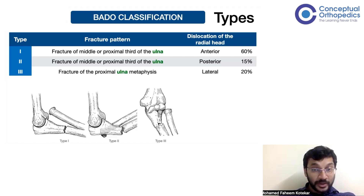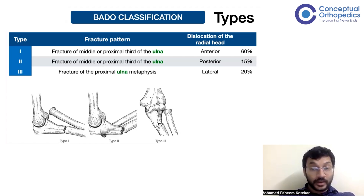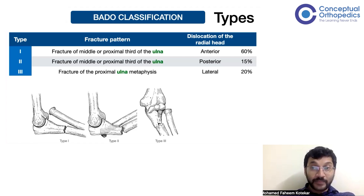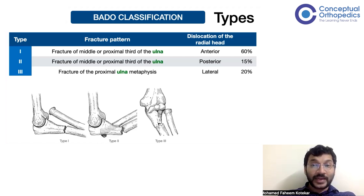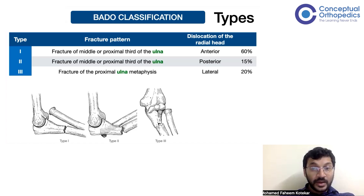Type 3 is a fracture of the proximal ulna metaphysis only — that is, only the proximal third of the ulna — and is associated with a lateral or anterolateral dislocation of the radial head. This accounts for about 20% of Monteggia fractures in the pediatric population.